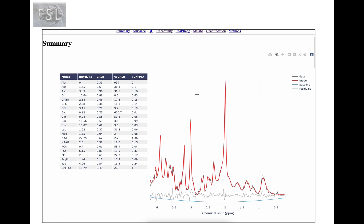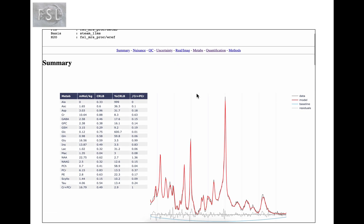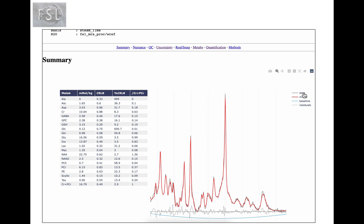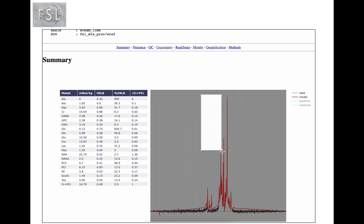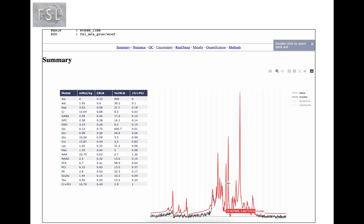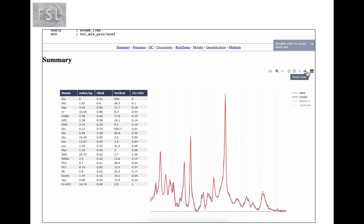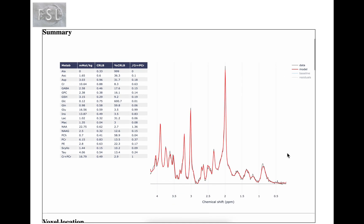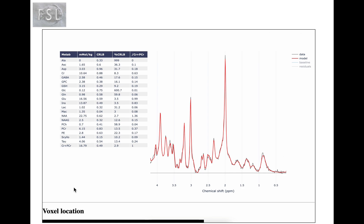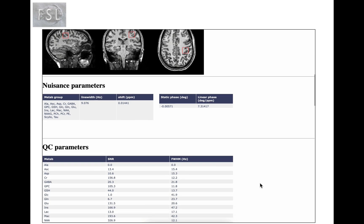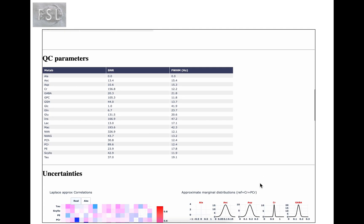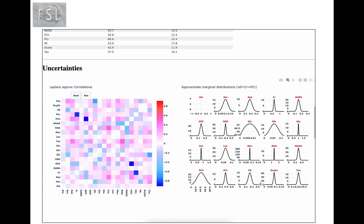In FSL MRS, once the fitting is done it produces a report in the form of an interactive HTML. As you can see, you can toggle on and off different parts of the data. You can zoom out and zoom in into bits of the spectrum that are of interest to check that the fitting has been done correctly. You've got a table summarizing the concentrations and the uncertainties, information on the voxel location, on the nuisance parameters or confound parameters, some QC.